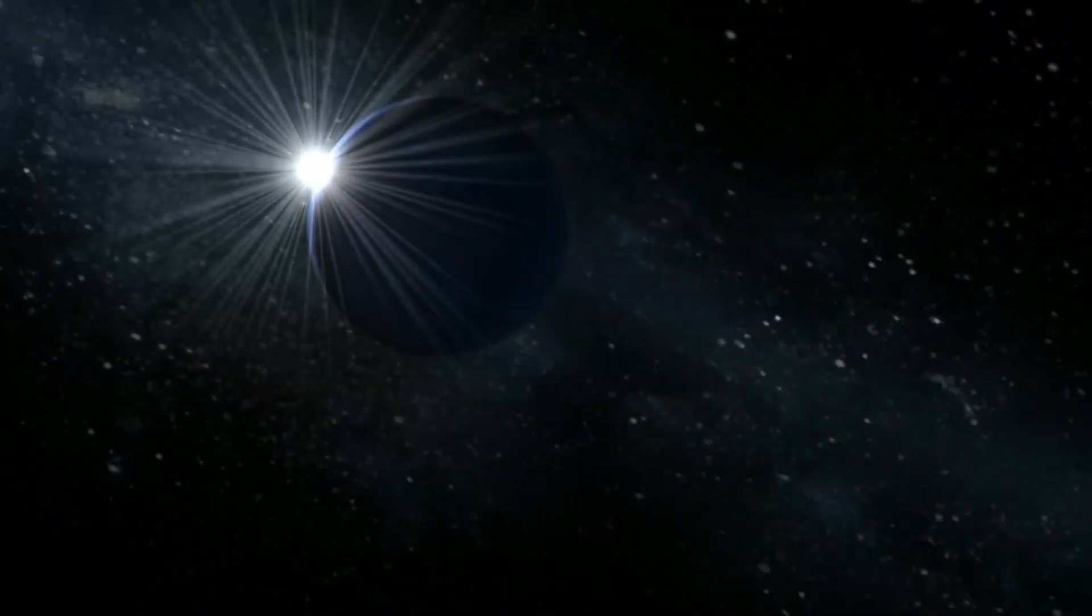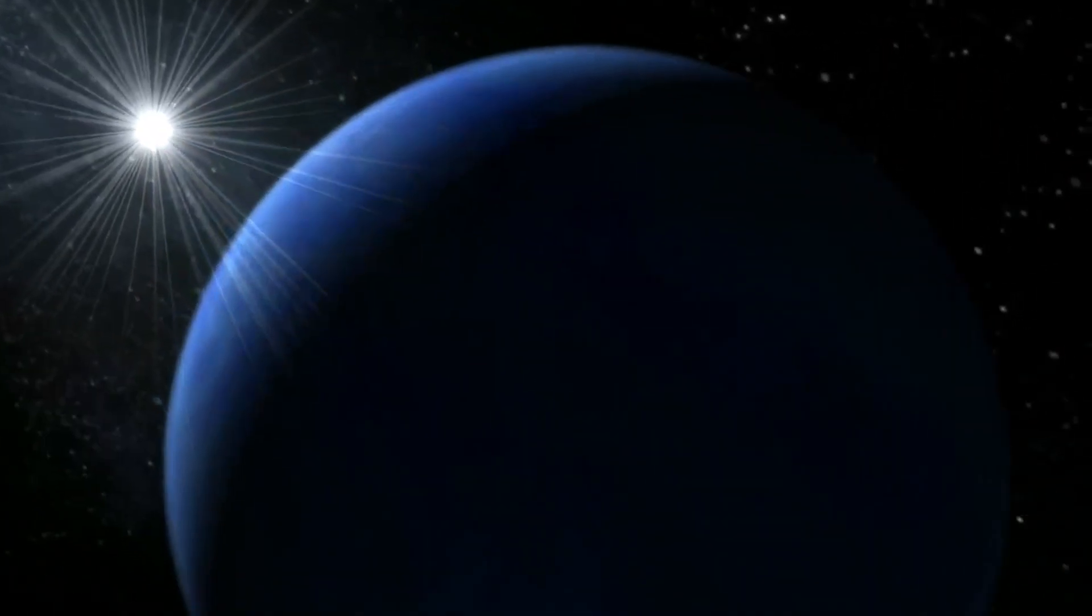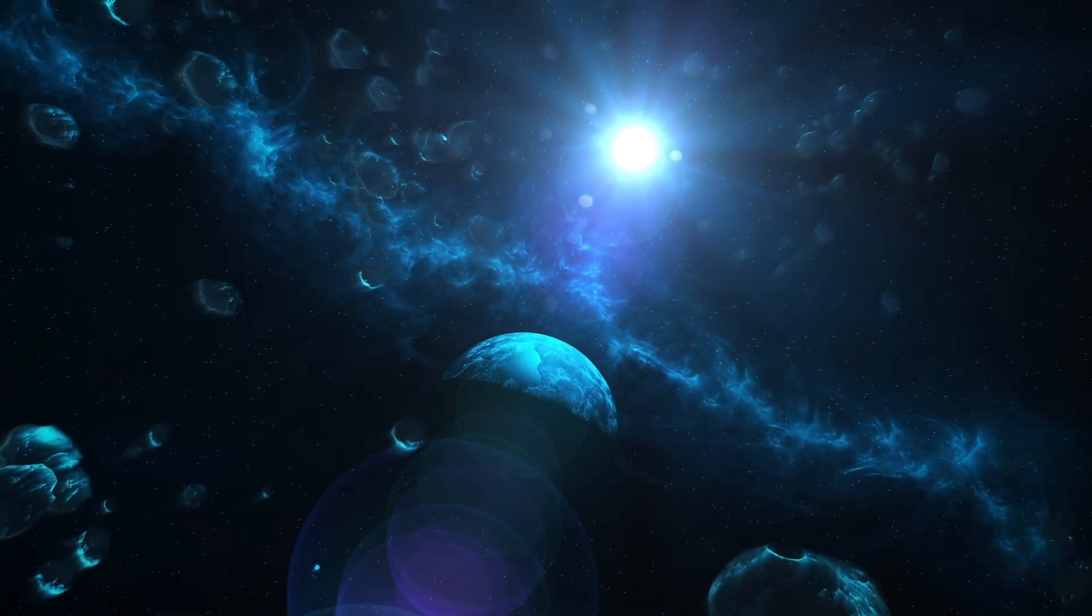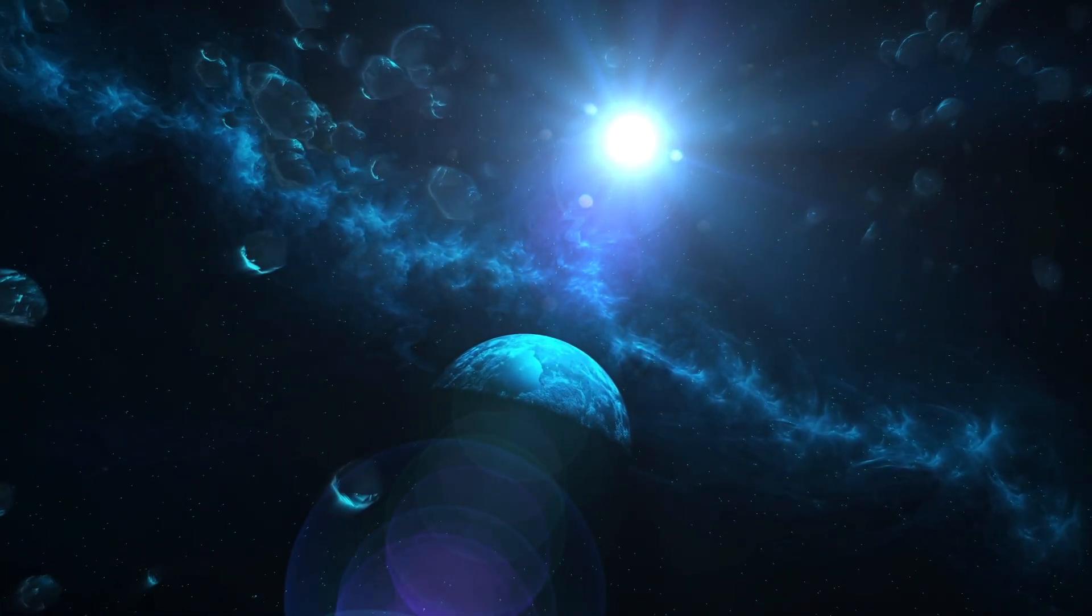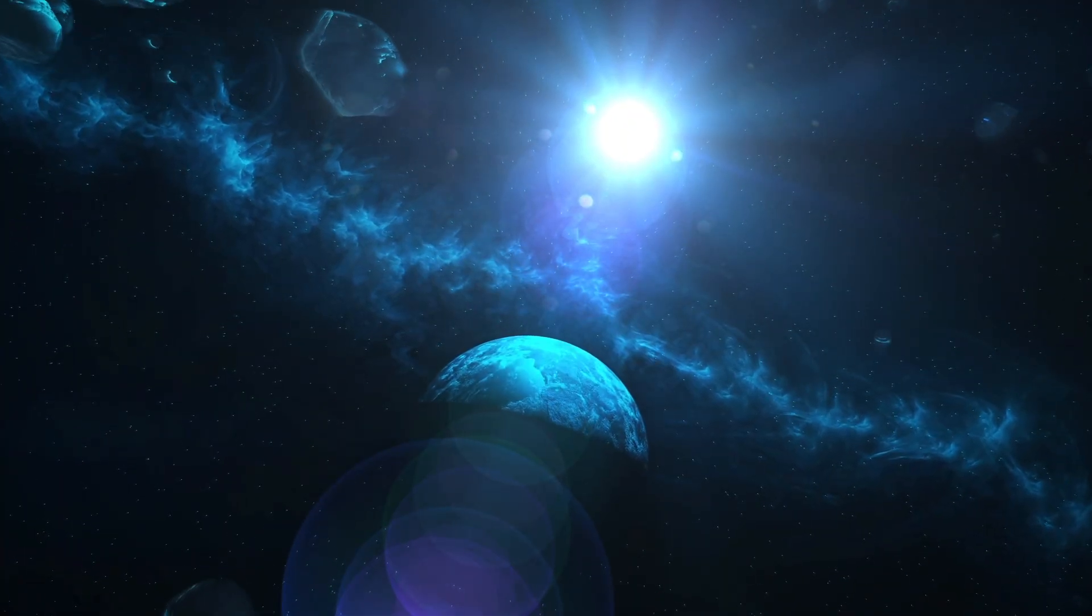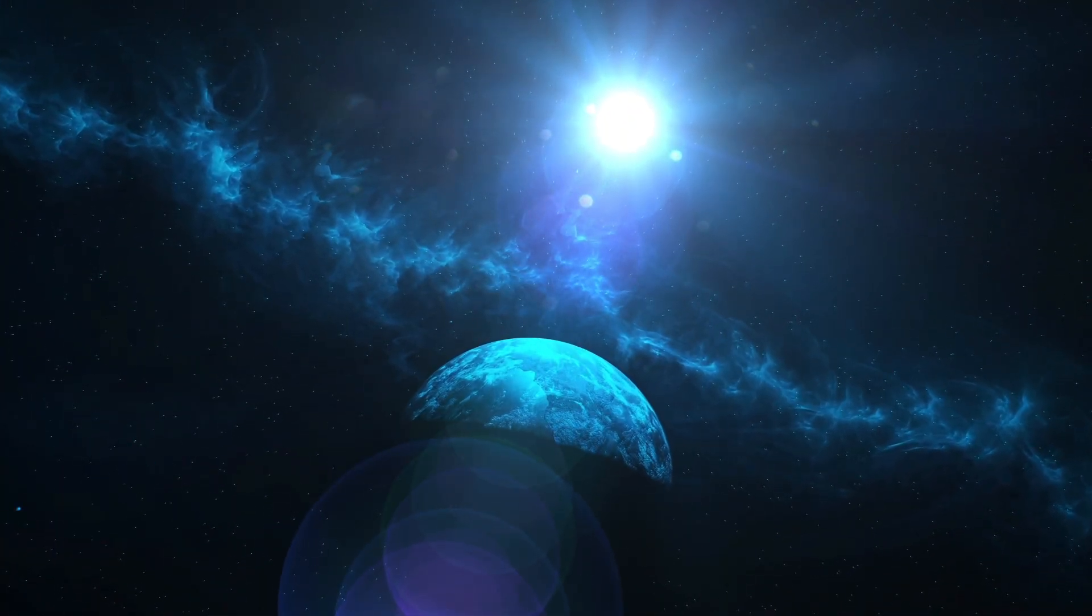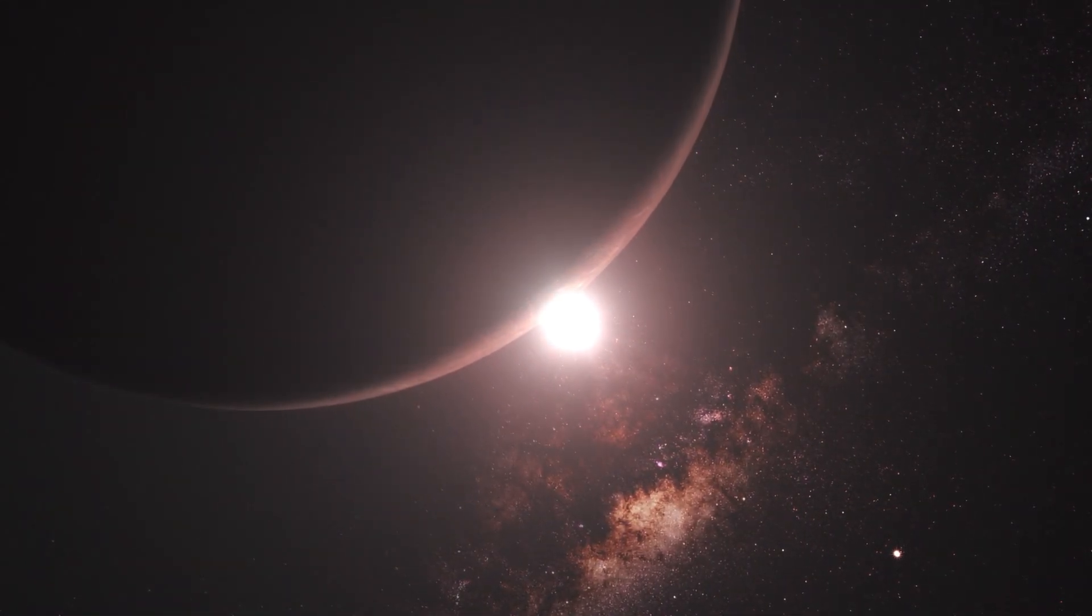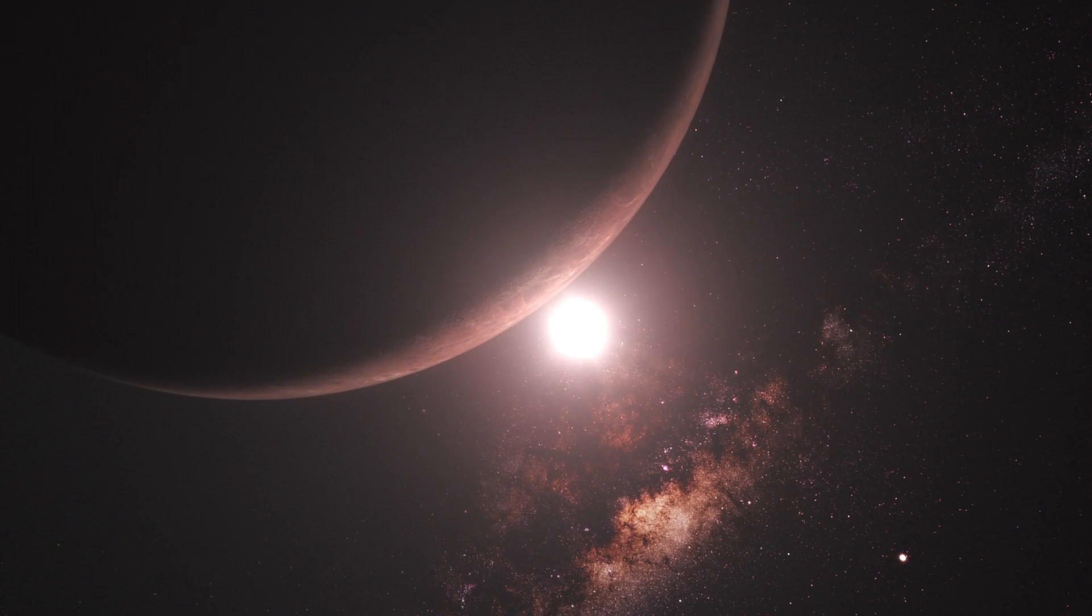Our solar system is quite ancient. Current estimates from radiometric dating of meteorites indicate that the Sun and its planets, including Earth, began forming around 4.6 billion years ago. Meanwhile, the universe itself is estimated to be about 13.8 billion years old, based on its observed expansion rate and the properties of the cosmic microwave background.